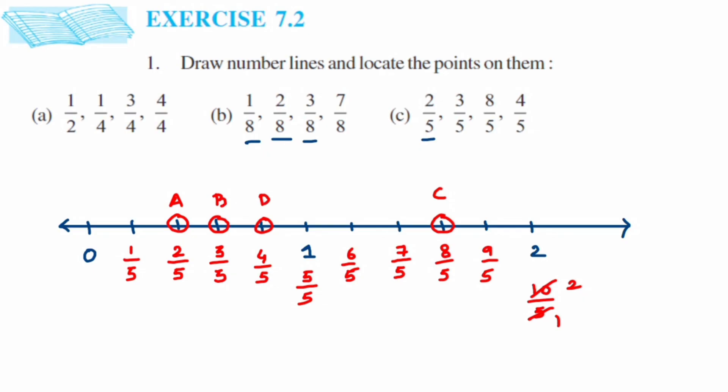That's how we solve these questions — it's very simple. Just check if it's a proper or improper fraction. If improper, the number may lie after 1. Always divide the equal parts based on the denominator. Proper fractions will always lie between 0 and 1. I hope it's clear — drop a comment below if you have any doubts. Thank you for watching!